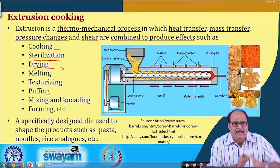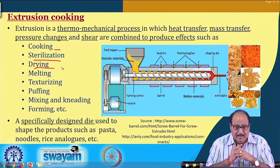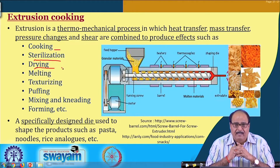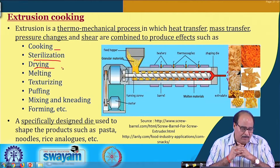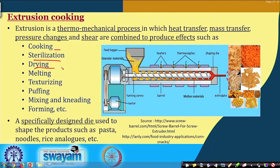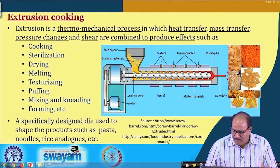Basically, so many effects we can get in the product by having proper combinations of these characteristics of the material, characteristics of the extruder process variables and system variables. Again, a specially designed die is used to shape the product such as the form of pasta, noodle, rice analogs, etcetera, or a variety of products in a variety of shapes and sizes.